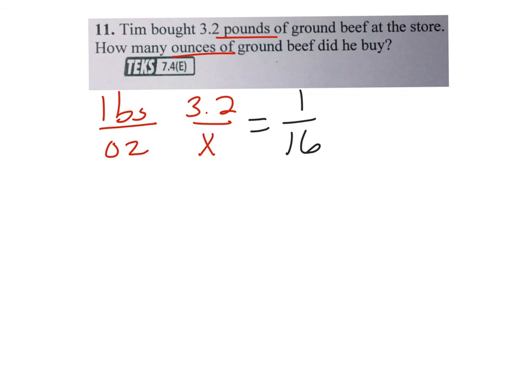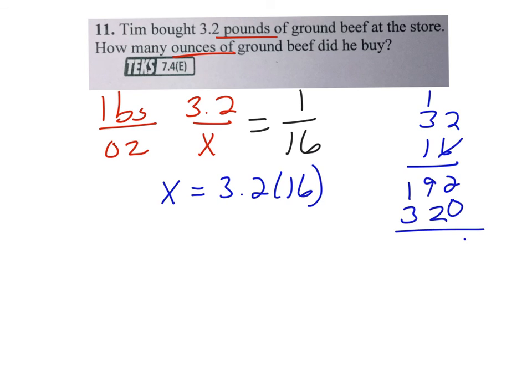Now to solve it, you would cross multiply, and you show that work. So this is 1x equals 3.2 times 16. Now if you need to, you go off to the side and do the multiplication. And then you make sure to use that decimal point. So that comes out to 51.2 ounces of beef.